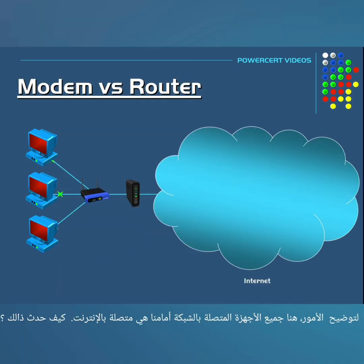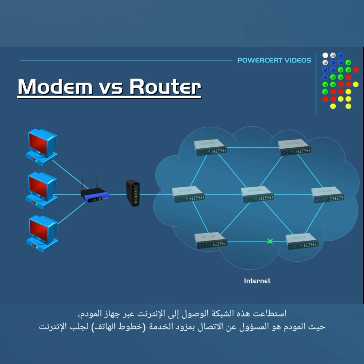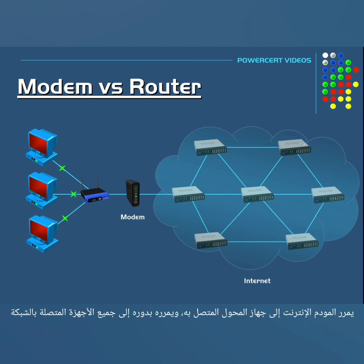So just to clear things up even more: over here we have the internet with all of its routers. Then as the internet is routed into this private network, it first reaches the modem. Then it goes from the modem to the router with its integrated switch, and then it's passed to all of its computers.